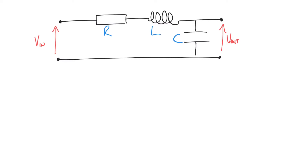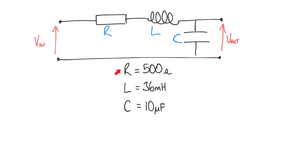We are going to keep our example pretty much the same — it's the same RLC circuit and the output is the voltage measured across the capacitor. The only thing we're going to change is the value of the resistance. Here we're looking at an over-damped case. The circuit values are: resistance R = 500 ohms, L = 36 millihenries, and C = 10 microfarads.